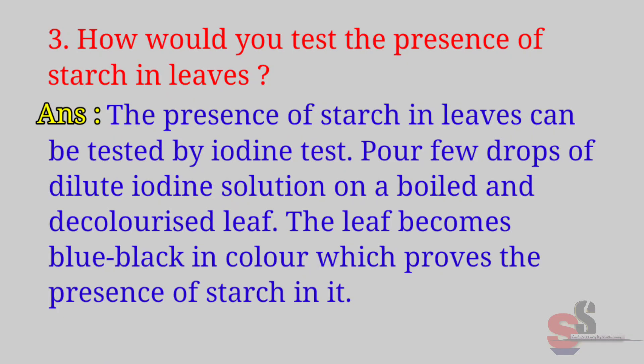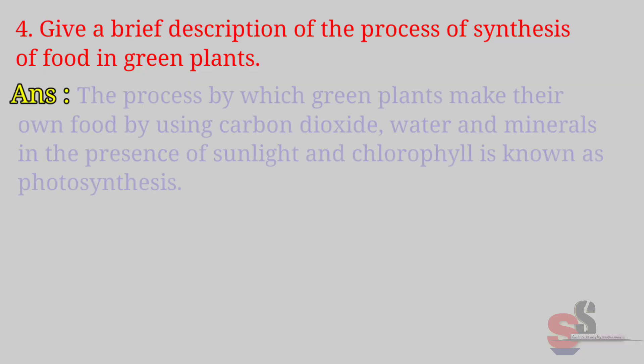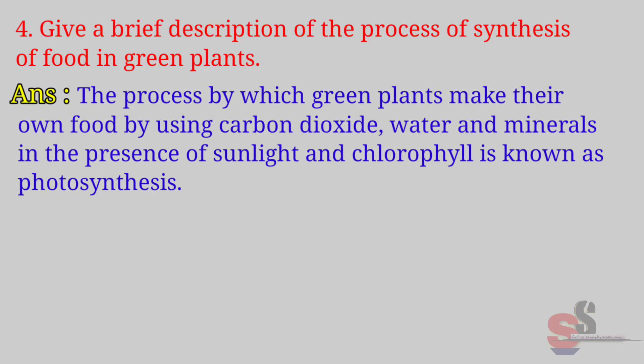Question number 4: Give a brief description of the process of synthesis of food in green plants. Answer: The process by which green plants make their own food by using carbon dioxide, water, and minerals in the presence of sunlight and chlorophyll is known as photosynthesis.